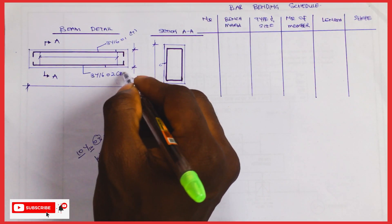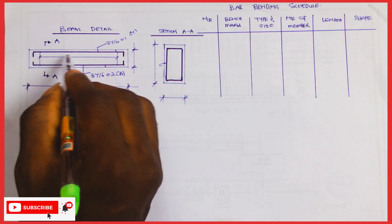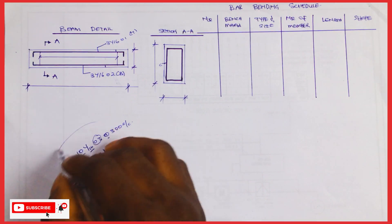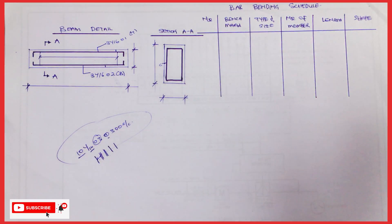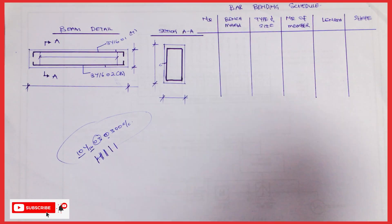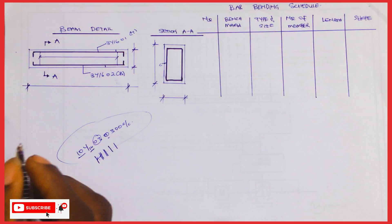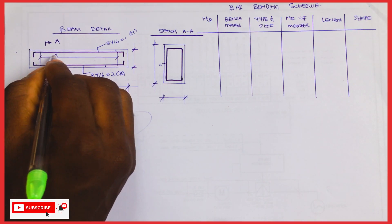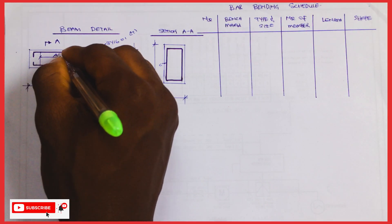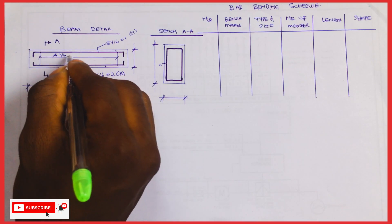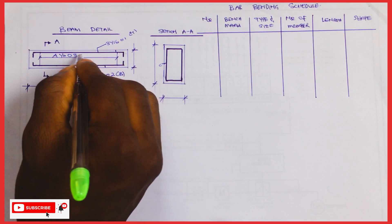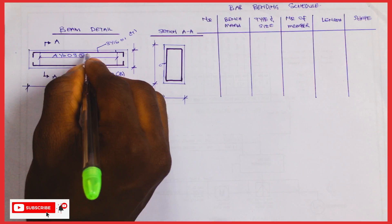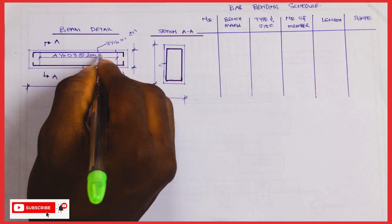Let's make the top reinforcement 3Y16 — call it 02 — and this is the bottom. This is known as the link. The link is just to hold both the top reinforcement and the bottom reinforcement together. So let's make the link — call it 03 — at 200mm center to center.